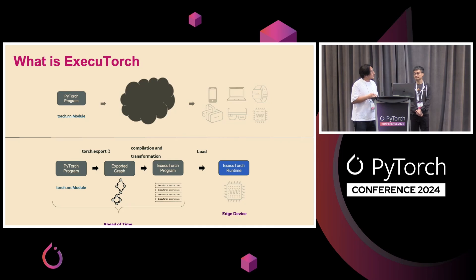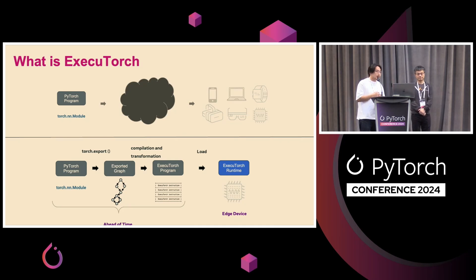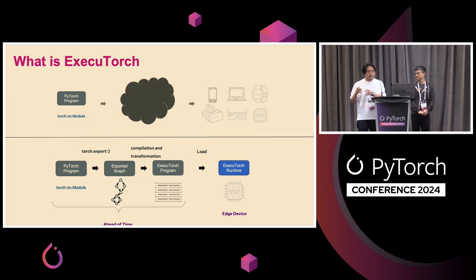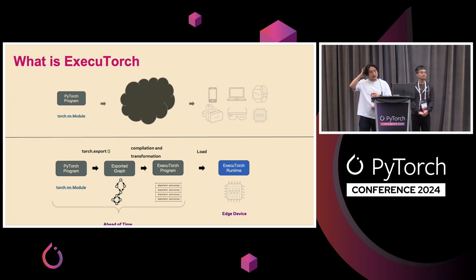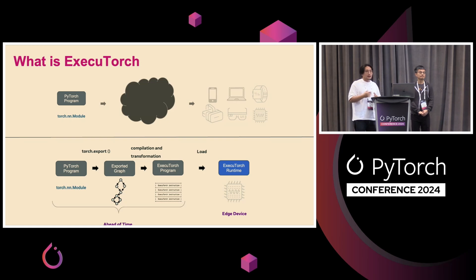Going back to the original problem of how to deploy PyTorch models on devices: underneath the hood, you have a PyTorch program. We use Torch.export to generate a semantically equivalent graph representation of that program. You can then do compilations and transformations all in Python, generate an ExecuTorch program ahead of time, and load it onto your device for actual inference.